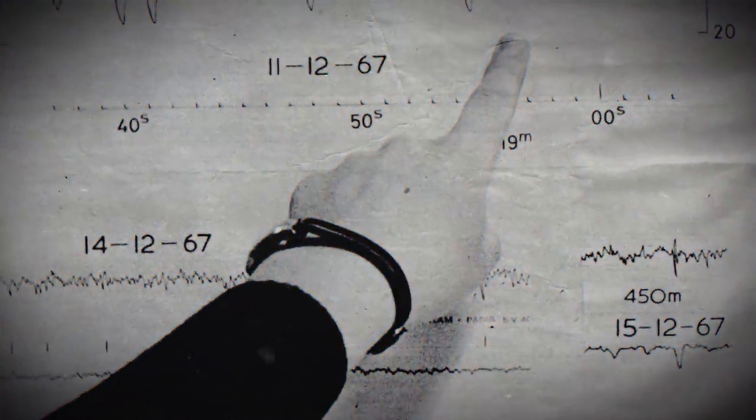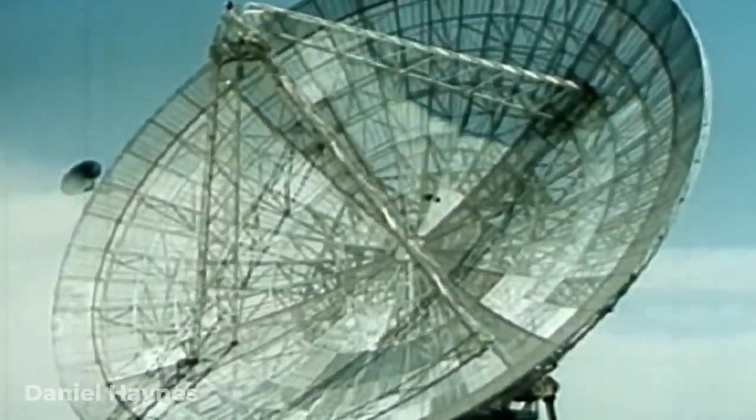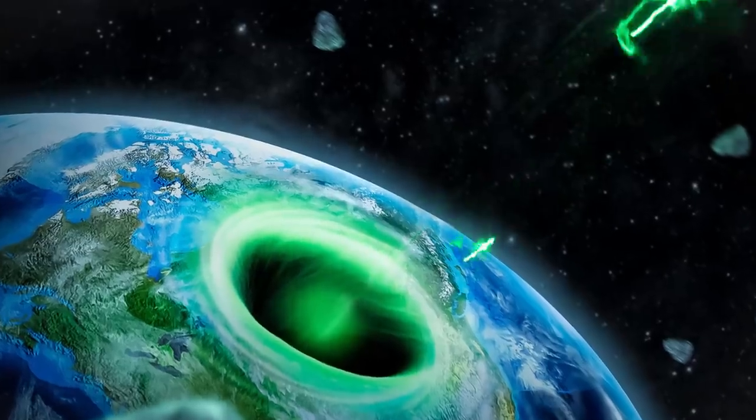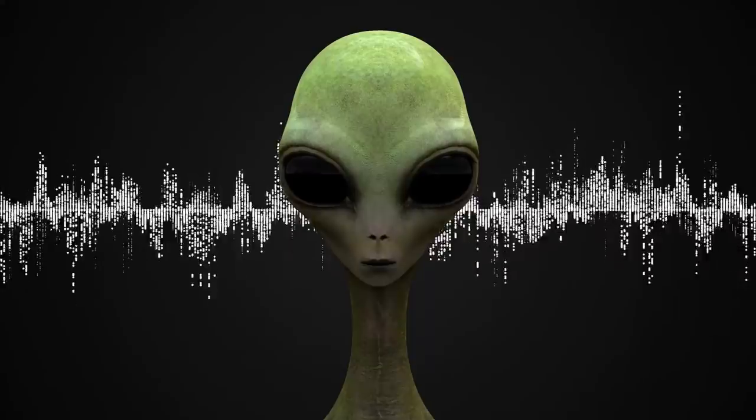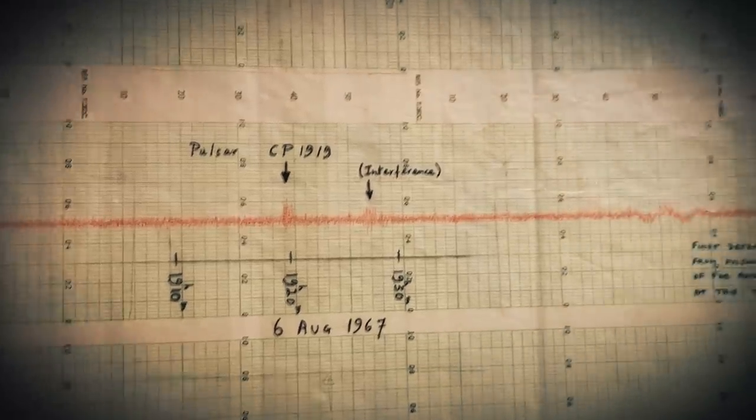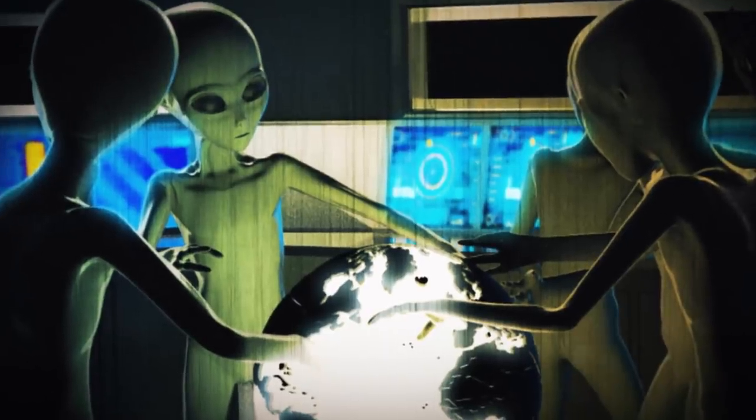Nobody had ever seen anything like it. No one on the team had any idea what the source of these radio pulses could possibly be. The idea was even thrown around that they had stumbled onto some sort of transmission from a distant alien civilization. They mostly jokingly named the mysterious signal LGM-1, short for Little Green Men. But the discovery of a second pulsating radio source on December 21, 1967, meant that the Little Green Men hypothesis was definitely not the answer. It wasn't aliens, but Burnell had still made a Nobel Prize-winning discovery.